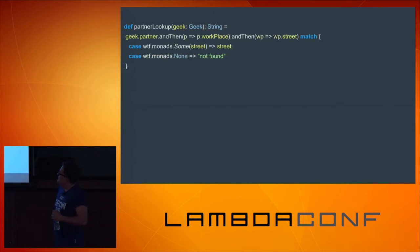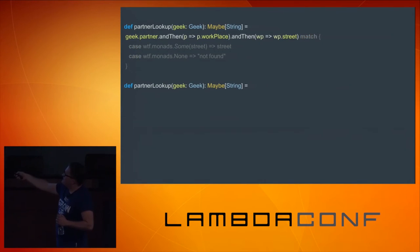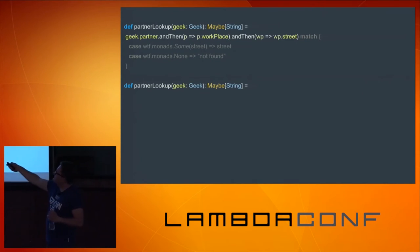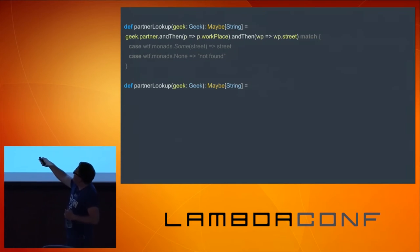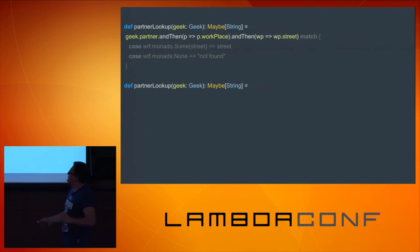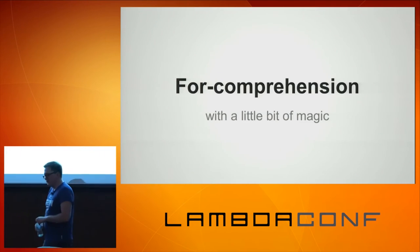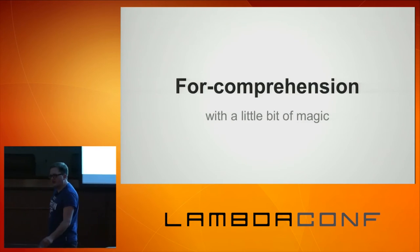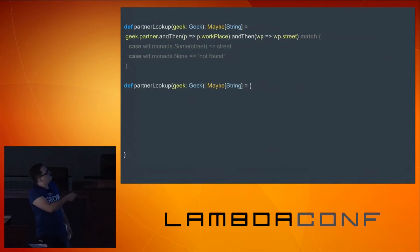My first idea would be to return the Maybe type as well, because someone working with our method might still be using other Maybe types and doing other andThen methods. The other thing we could also do is called for comprehension. In Haskell, it's called do notation or something like that. Basically, it's syntactic sugar over this code.